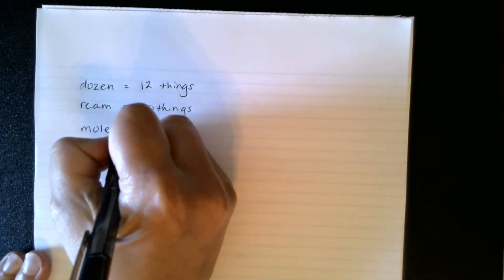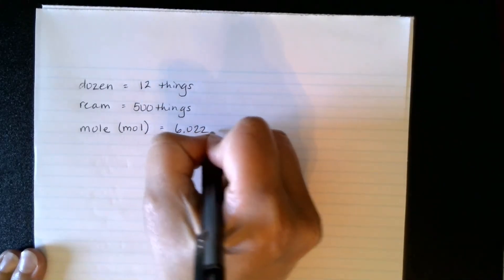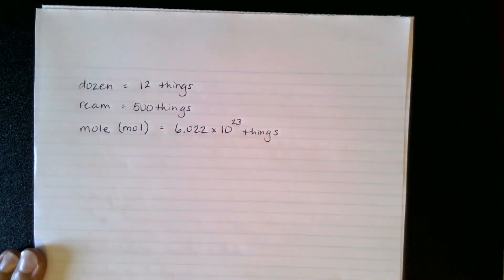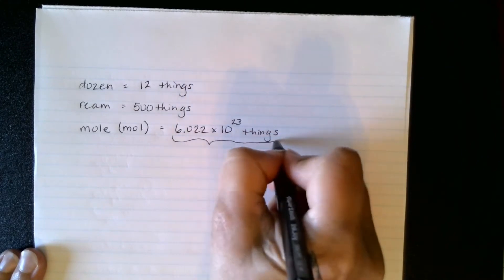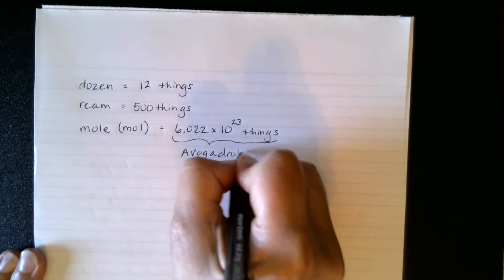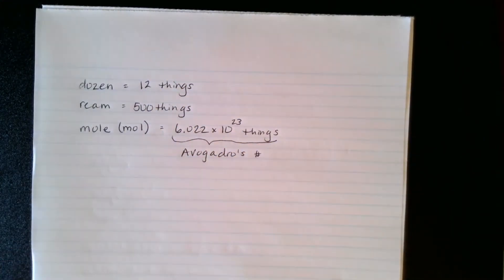In chemistry, since we deal with atoms and atoms are very, very small, we use a term called a mole, abbreviated mol. A mole is 6.022 times 10 to the 23rd things, and they've given this a name — Avogadro's number. So Avogadro's number is 6.022 times 10 to the 23rd, and that's how many things you would have in a mole.